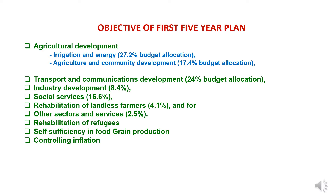The major objectives of the First Five-Year Plan included: agriculture development with 27% budget allocation for irrigation and energy; 17.4% for agriculture and community development; transport and communication development with 24% budget allocation; industry development at 8.4%; social services at 16.6%; rehabilitation of landless farmers at 4.1%; and other sectors and services at 2.5%. The focus was given to rehabilitation of refugees, self-sufficiency in food production, and controlling inflation.